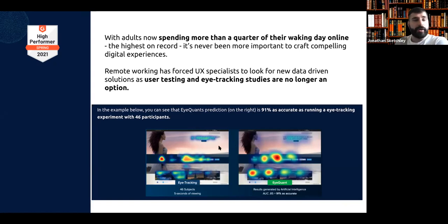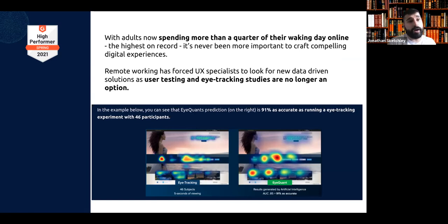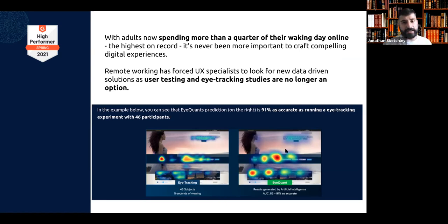As adults now spend more than a quarter of their waking day online, it's so important to stand out and craft compelling digital experiences. With remote working making normal user testing and eye tracking studies less accessible, we need new data-driven solutions. Our attention maps and analysis metrics — clarity scores, excitingness scores, perception maps, hot spots, and regions of interest — show that iQuant's prediction is 91% accurate compared to running an eye tracking experiment with 46 participants, while working much faster.